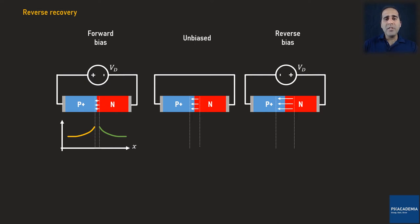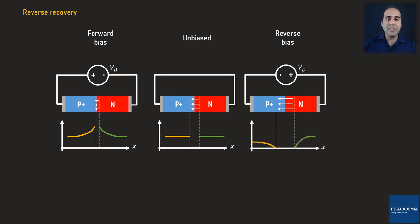When the diode is not biased, we have two flat lines representing the minority charge carrier concentration on both sides. And when the diode is reversely biased, the concentration of minority charge carriers reduces by approaching the depletion region edges.